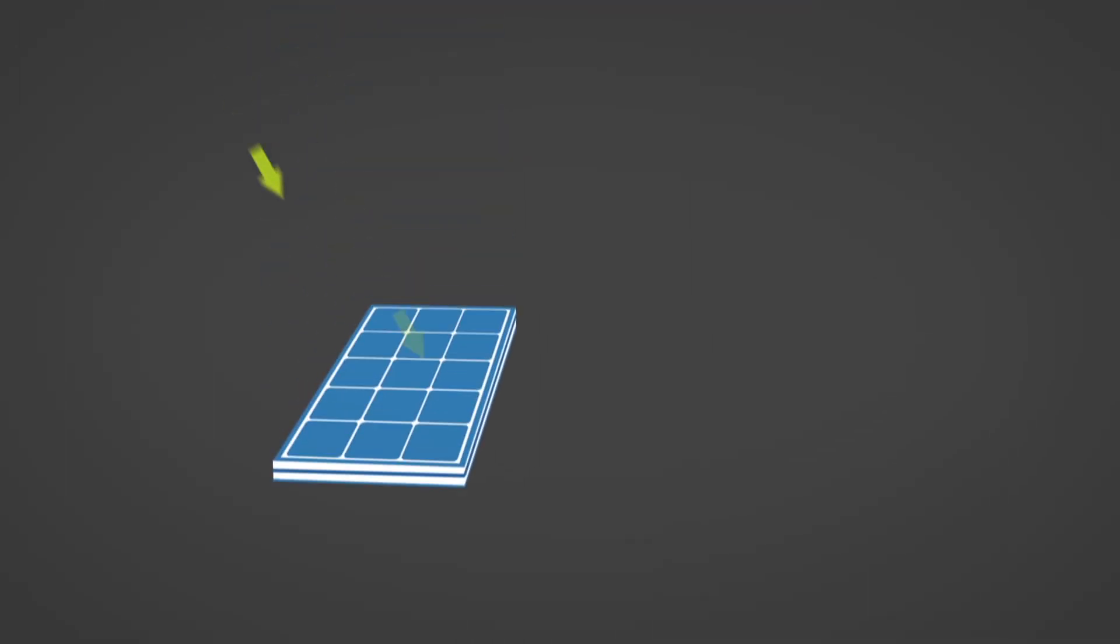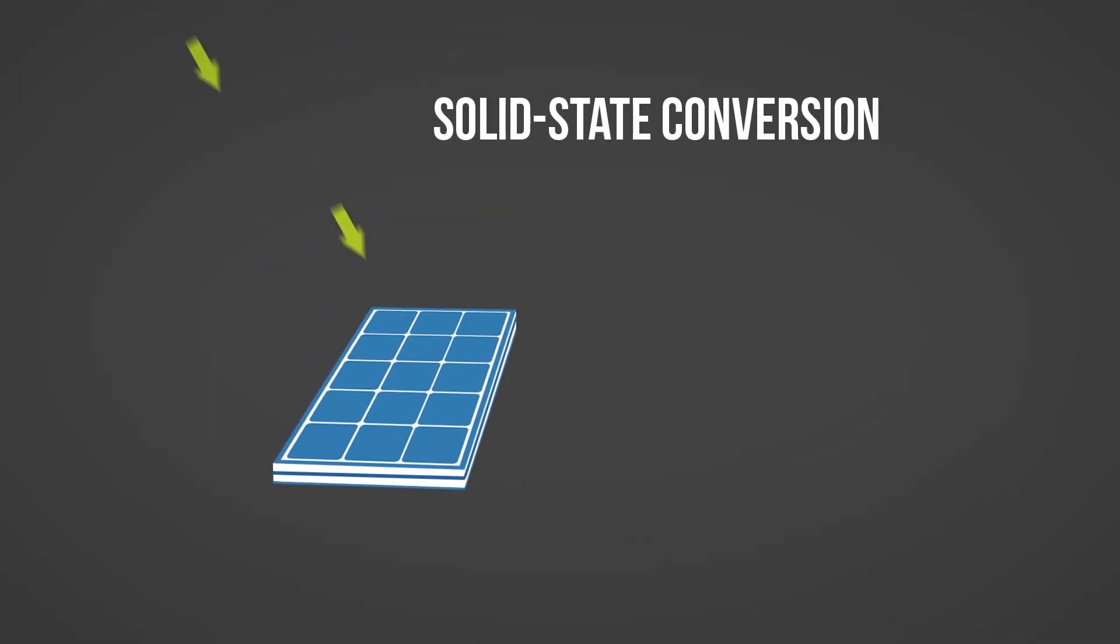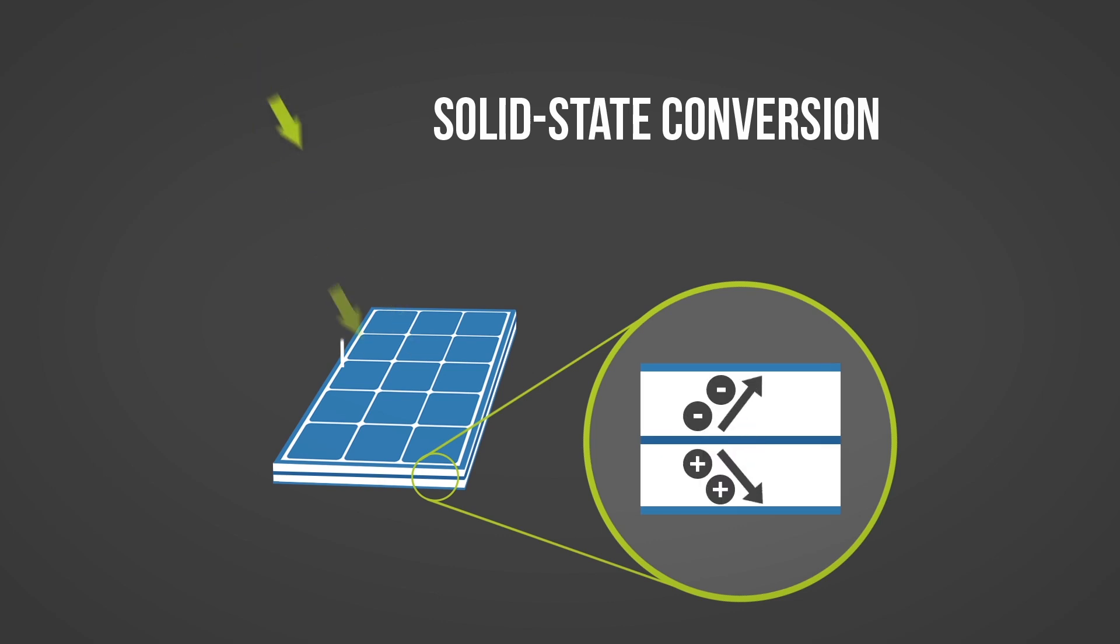Finally, electricity can be created through solid state conversion, where electricity is generated using the structure and properties of a solid. The specially constructed solid consists of different molecules packed closely together that create an electric current when stimulated. An example of a technology that utilizes solid state conversion is a solar PV cell.